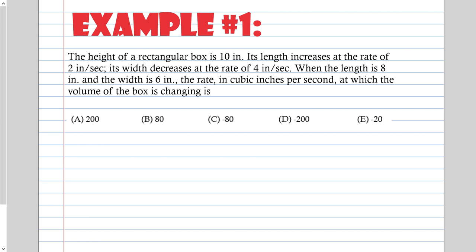The height of a rectangular box is 10 inches. Its length increases at the rate of 2 inches per second. Its width decreases at the rate of 4 inches per second. When the length is 8 inches and the width is 6 inches, the rate in cubic inches per second at which the volume of the box is changing is... So list out the rates you can identify. The height of the box is 10 inches.